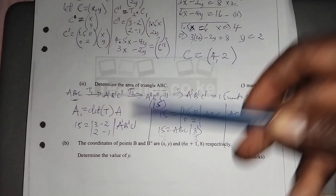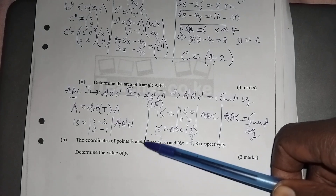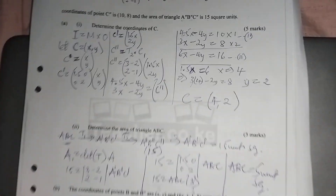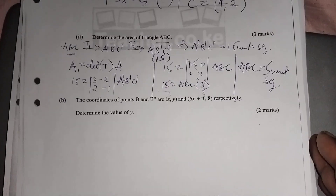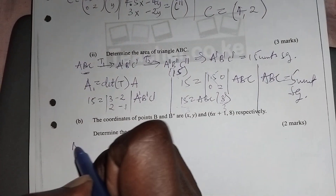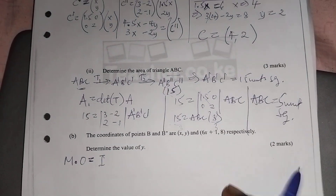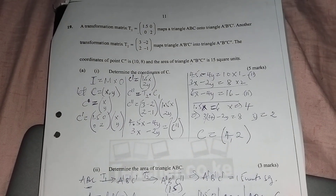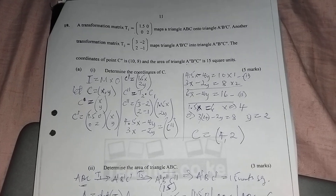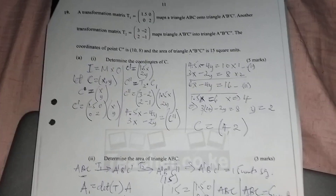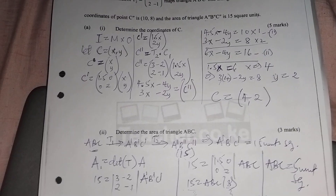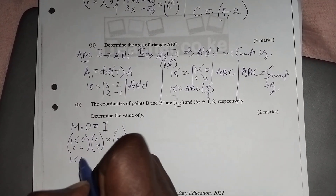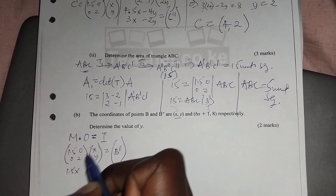Then part B: the coordinates of B and B'' are given respectively — determine the value of Y. Again we use matrix times object equals image. Given B as the original (X, Y), the first transformation matrix T1, which is [1.5, 0; 0, 2], multiplied by (X, Y) gives B'. This multiplication gives B' as (1.5X, 2Y).